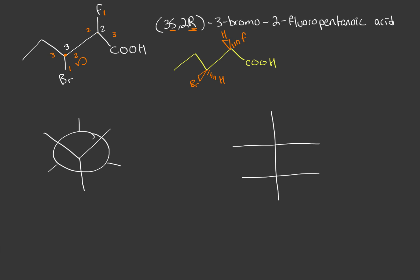That's the correct stereochemistry of this molecule as drawn. Now it's a lot easier to draw the Newman projection. Looking through this carbon, the fluorine is going to be on our right, the hydrogen on our left, and the carboxyl group on the bottom. Bromine is on the bottom left, hydrogen is on the bottom right, and the ethyl group is on top.